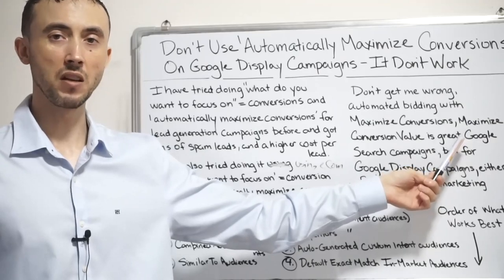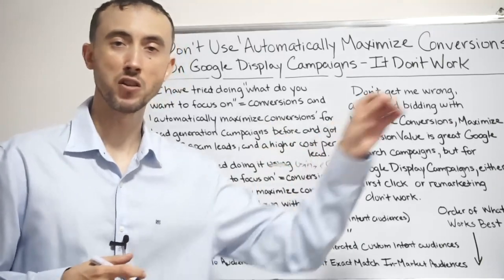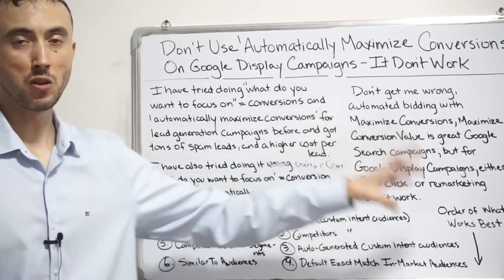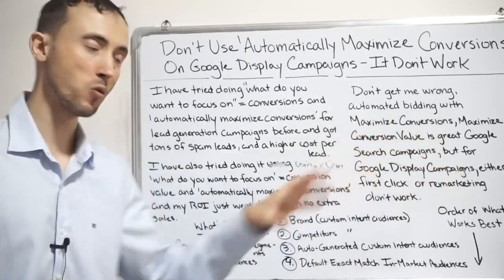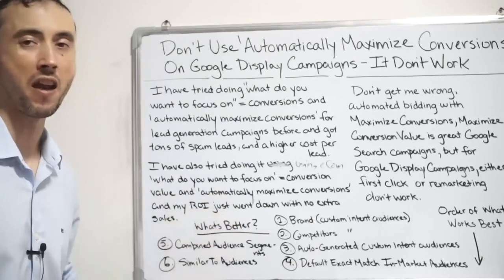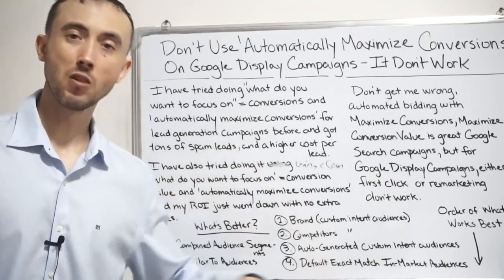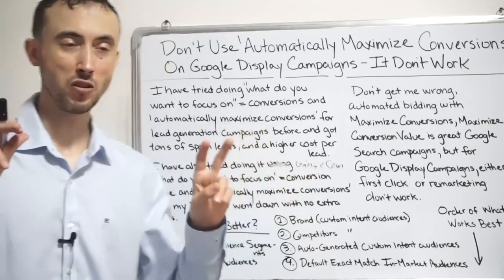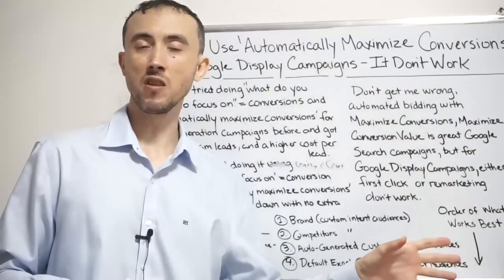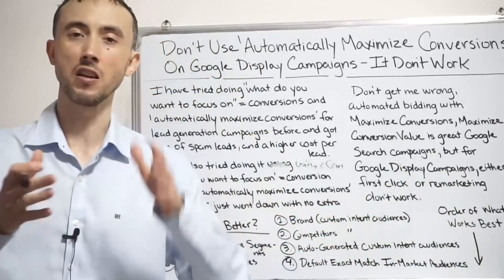Seeing how well automated bidding strategies work on search campaigns and Pmax campaigns, I was quite disappointed. As it comes to display campaigns, it does not do better. Even when you're telling Google to get more purchases — it doesn't generate fake purchases the way it generates fake leads — but it starts opening up the spigot on all this traffic, and the targeting isn't the same level of precision you had when you set it up yourself.